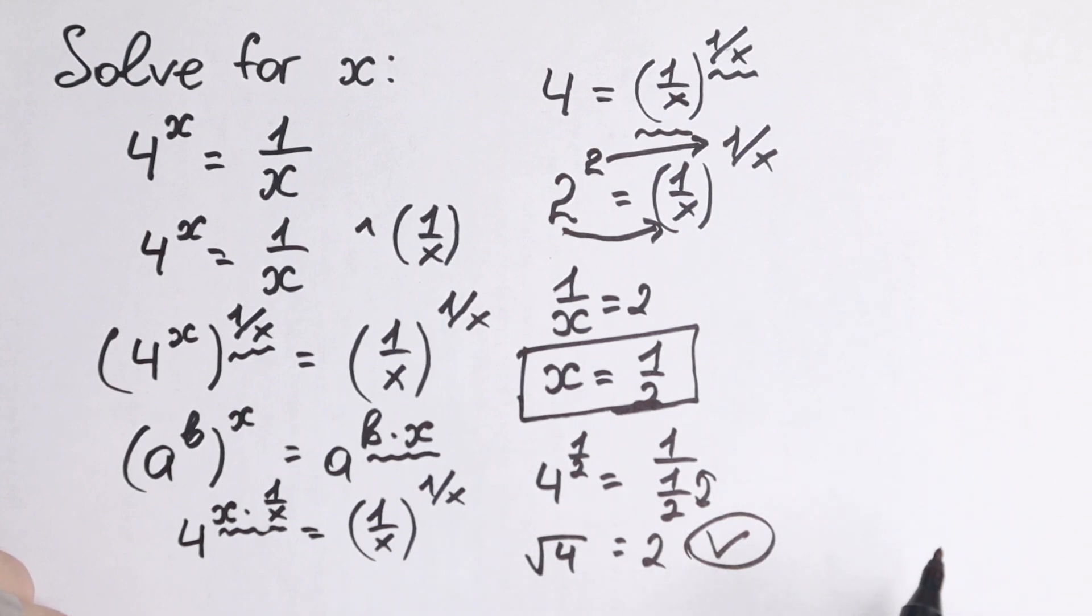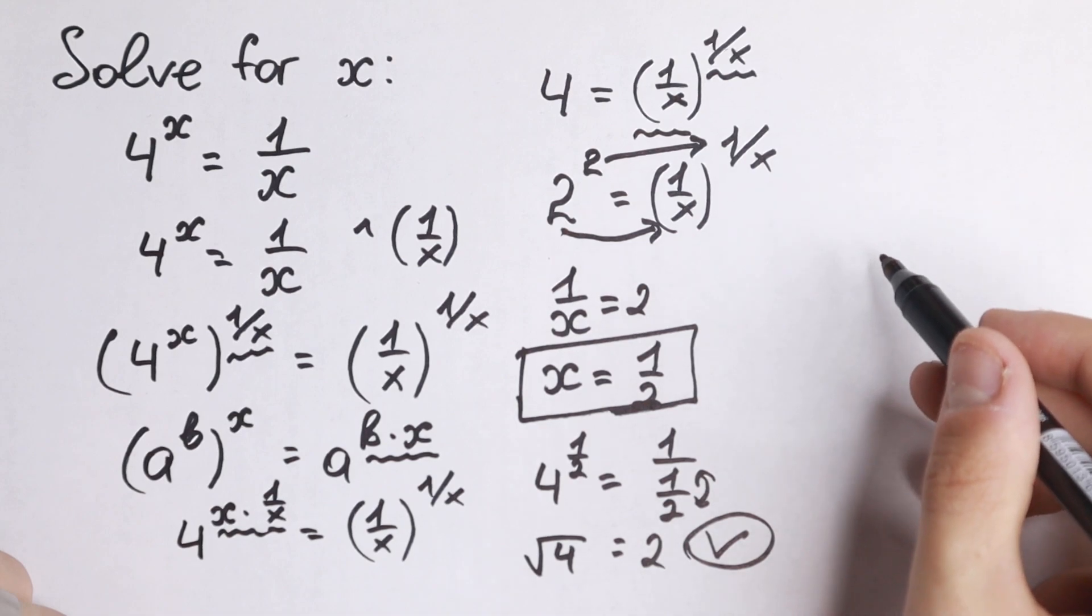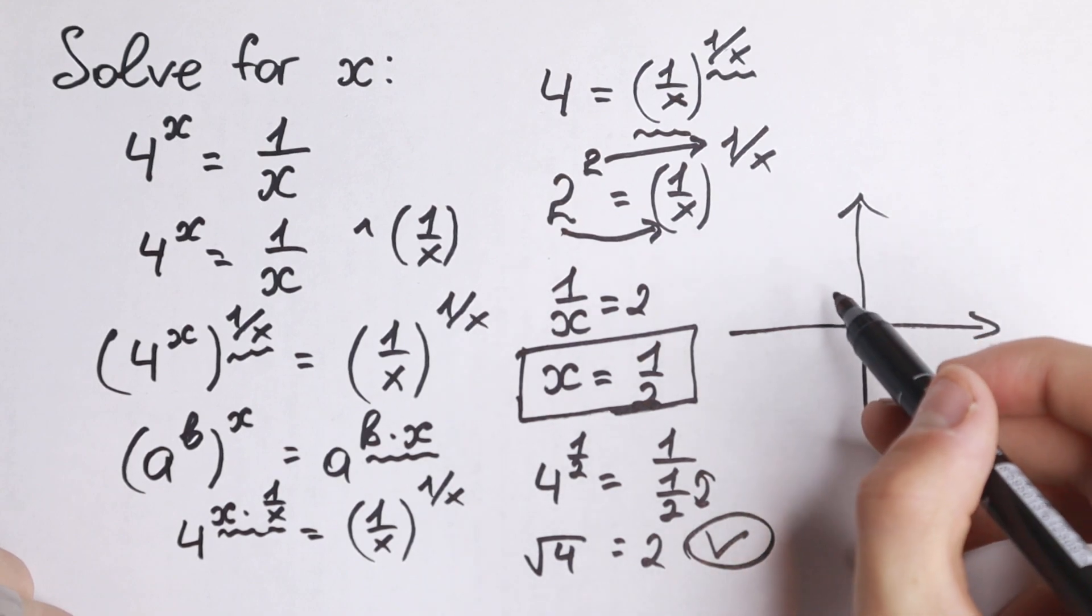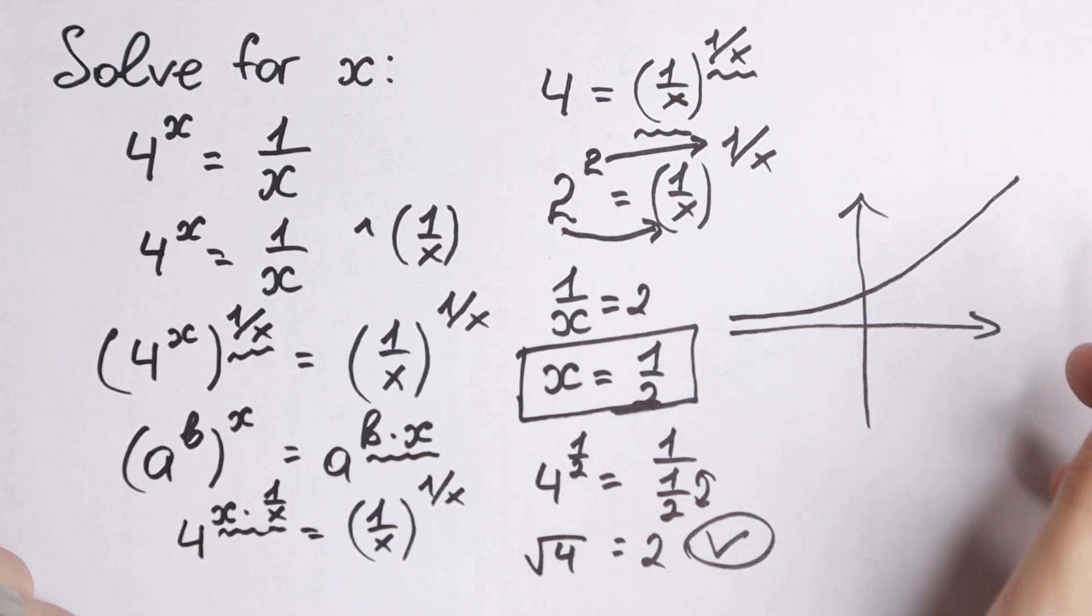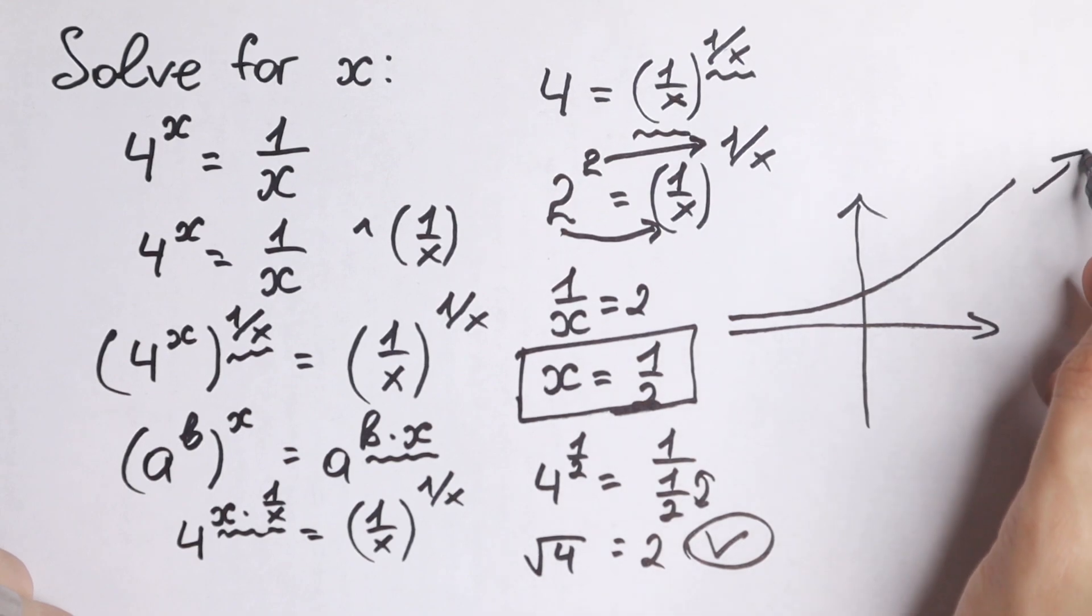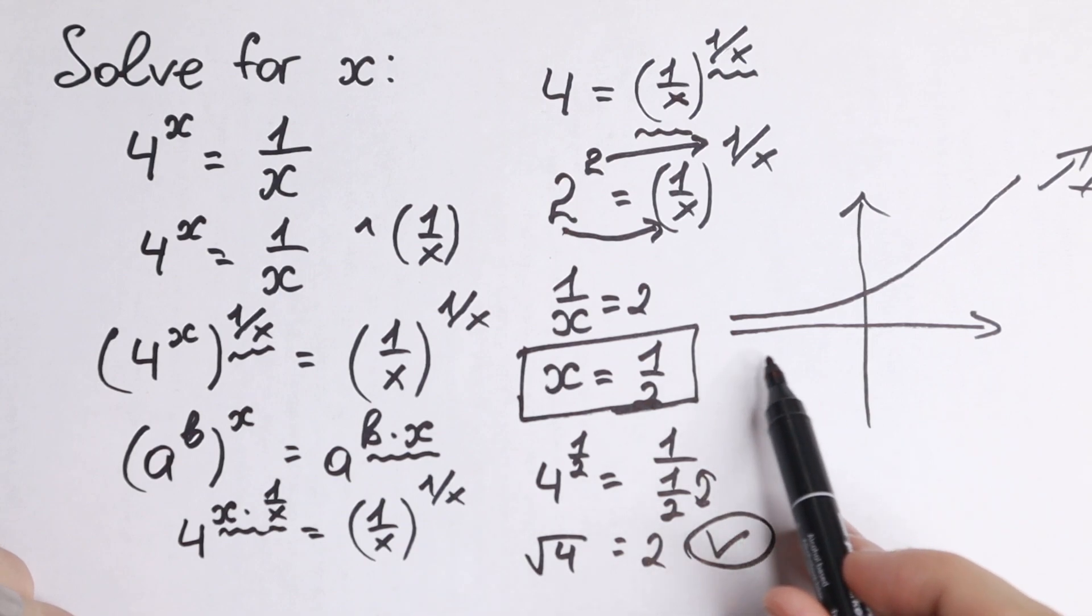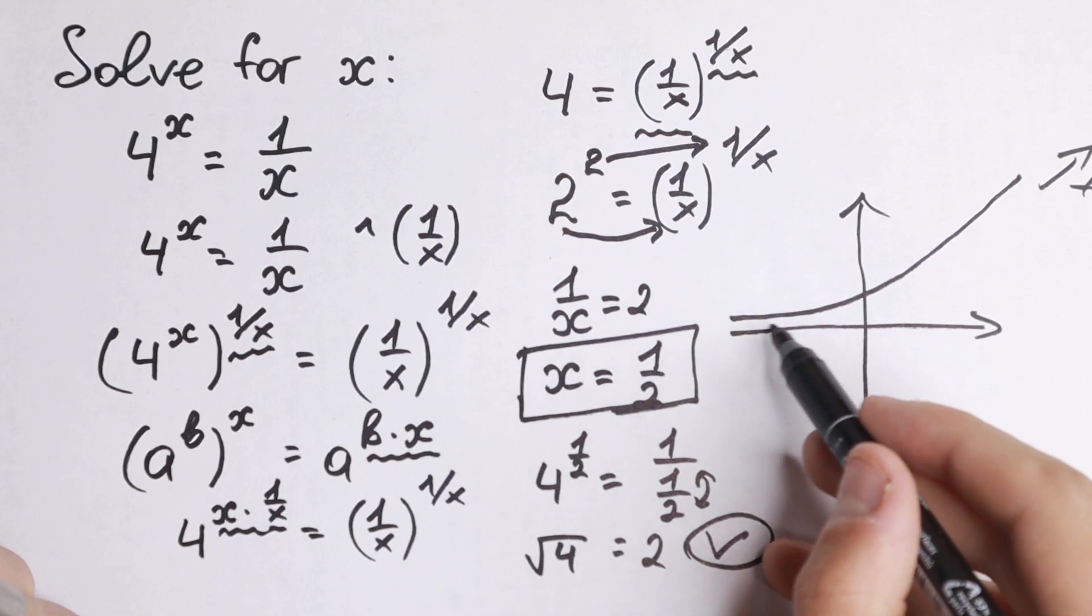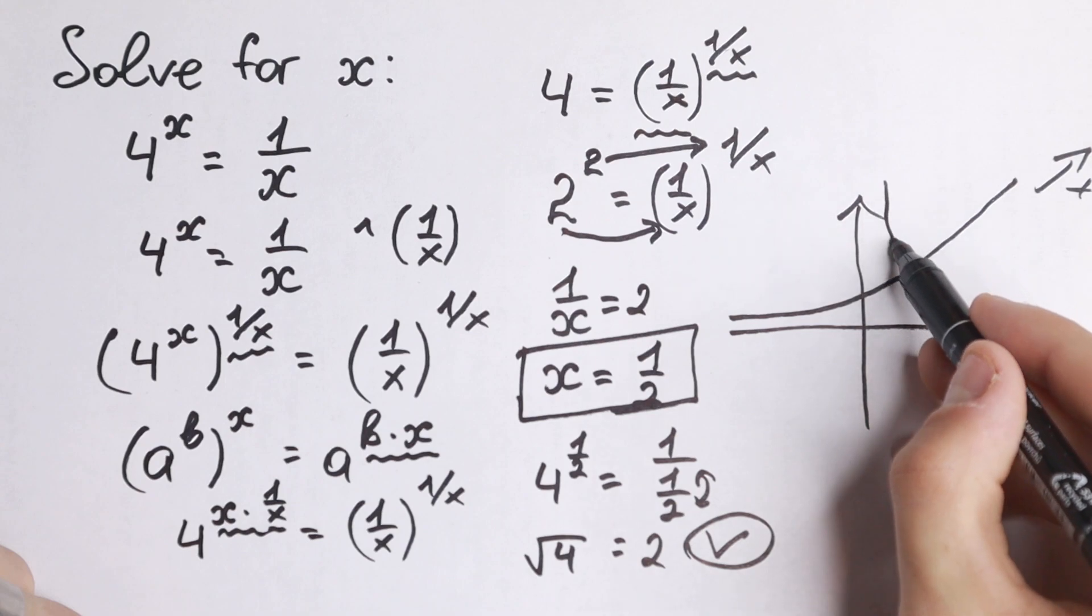Our answer is good. Moreover, we can use a graph solution. 4 to the x is an increasing function, so it looks approximately like that. It goes to plus infinity. And 1 over x - I want to draw it only in the positive region, because in the other area this function does not exist for our purposes.